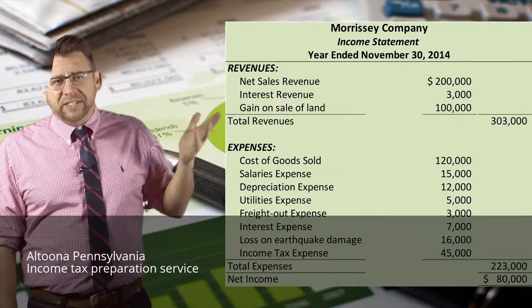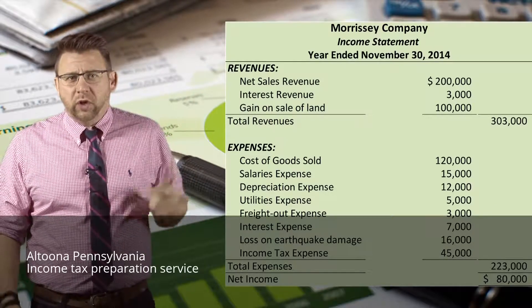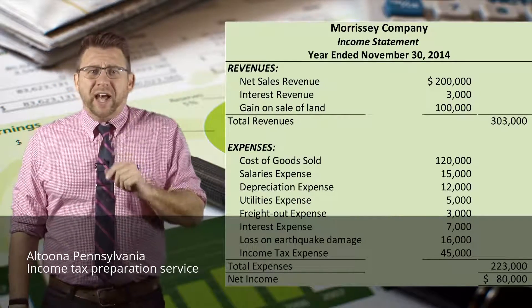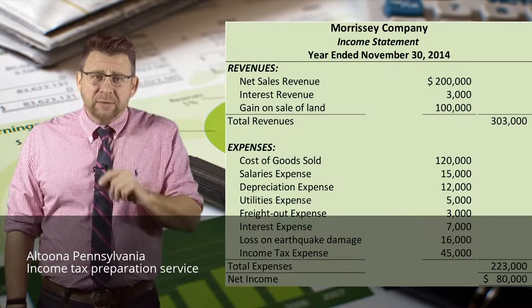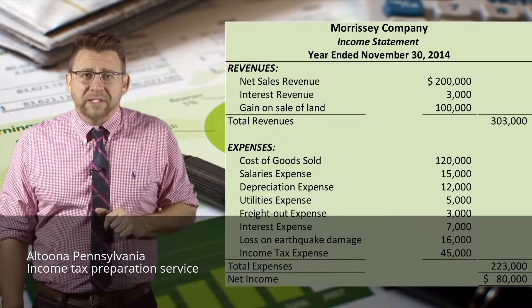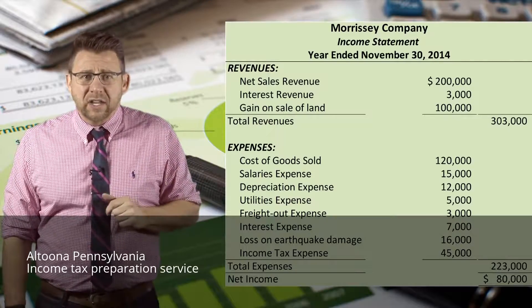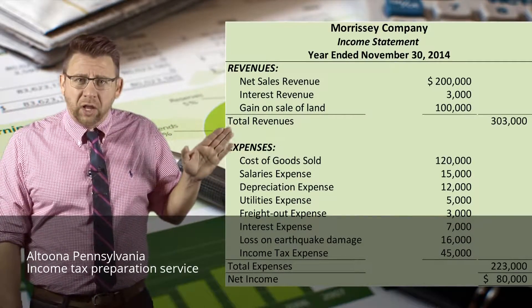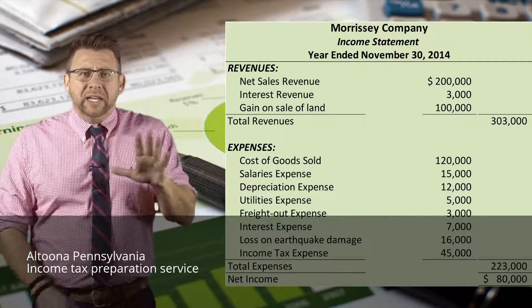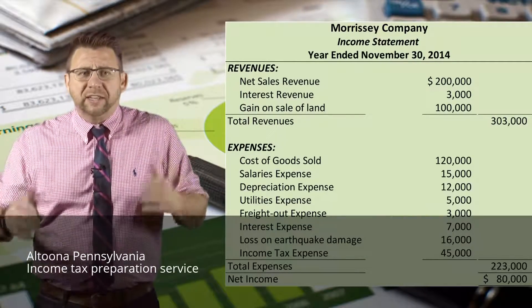Here is an example of a single-step income statement. You can see that revenues and gains, which we will learn about later, are all listed together — same with expenses. One area that some students struggle with: when we report financial statements, if we have a list of common accounts like revenues and expenses, we list them all in one column and carry the total out to the far column. That does not mean those columns represent debit and credit when presenting financial statements.